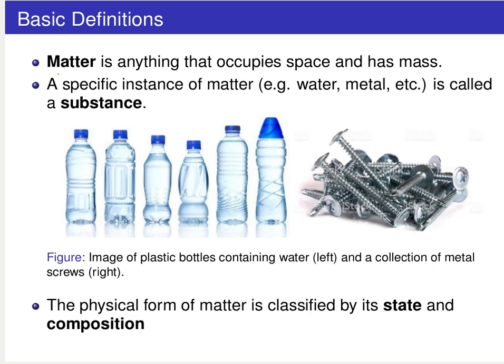So let's start things off with a few basic definitions. First off, matter is anything that both occupies space and has mass. This is one of these examples of a definition that's hopefully in line with your common sense notion of the term. Now, a specific instance of matter, whether it be water or metal making up screws here, is called a substance. We can talk about the physical form of matter and classify it by two different properties, its state and its composition.